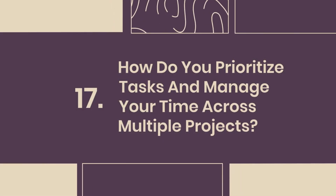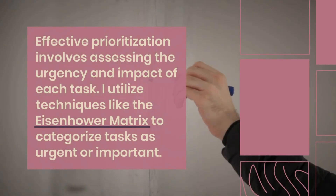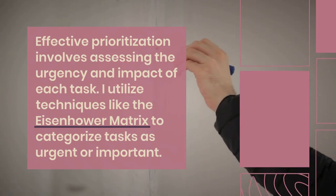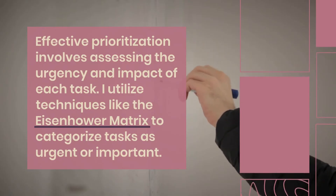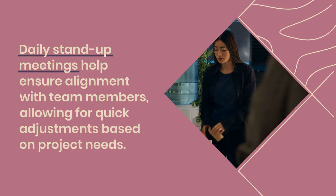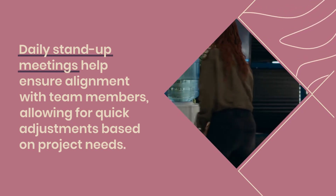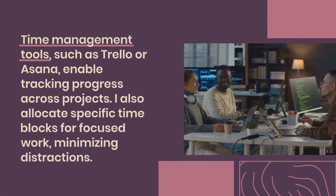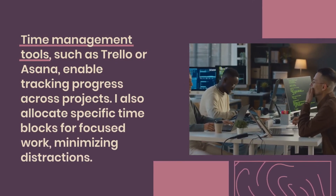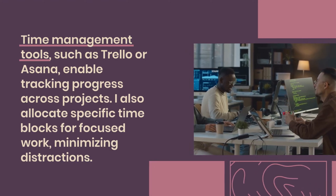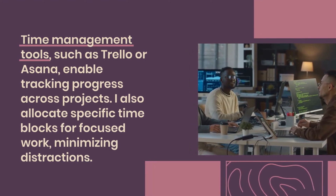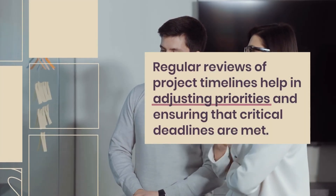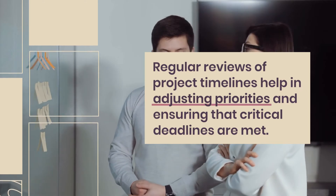Question 17: How do you prioritize tasks and manage your time across multiple projects? Effective prioritization involves assessing the urgency and impact of each task. I utilize techniques like the Eisenhower Matrix to categorize tasks as urgent or important. Daily stand-up meetings help ensure alignment with team members, allowing for quick adjustments based on project needs. Time management tools, such as Trello or Asana, enable tracking progress across projects. I also allocate specific time blocks for focused work, minimizing distractions. Regular reviews of project timelines help in adjusting priorities and ensuring that critical deadlines are met.